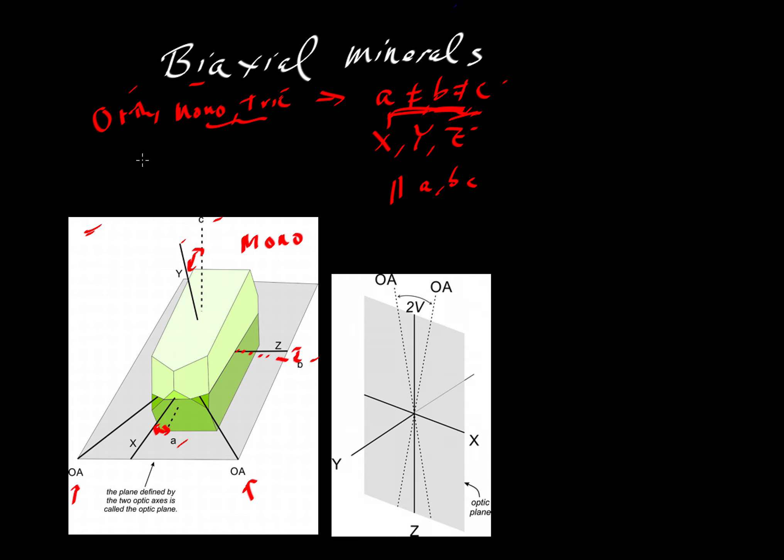Now, there are another couple of optical properties that are very important. For the uniaxial minerals, we had a single optic axis, a single OA, the way it's shown here in this diagram. And when you look down an optic axis, that means the mineral, when you look in that direction, it looks like it is isotropic.